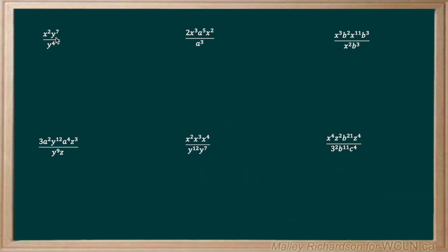We have x to the power of 2 times y to the power of 7, all over y to the power of 4. The only variables with the same base are the two y's, so these are the only ones we need to deal with. Since this is division, we subtract the exponents: 7 minus 4. So we're left with x squared times y to the power of 3, giving us a final answer of x to the power of 2 times y to the power of 3.